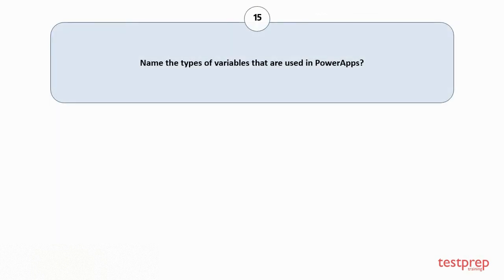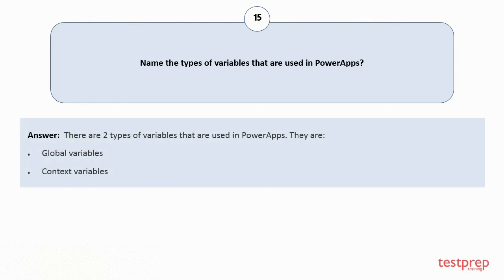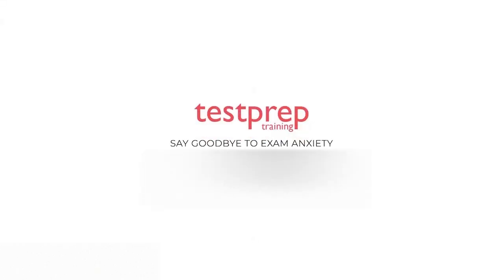Question number 15: Name the types of variables that are used in PowerApps. There are two types of variables that are used in PowerApps: 1. Global variables. 2. Context variables. For more such videos, subscribe to our channel.